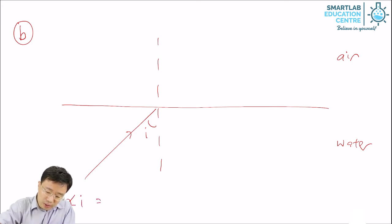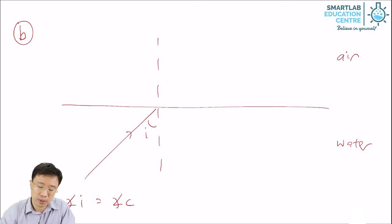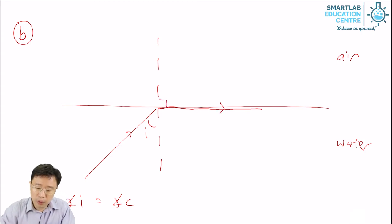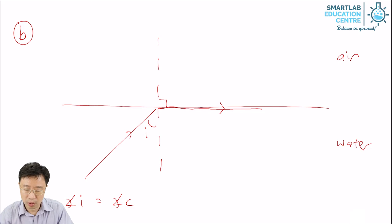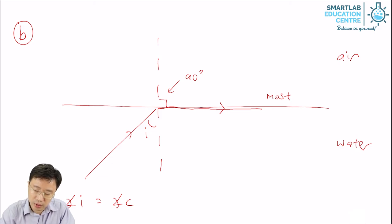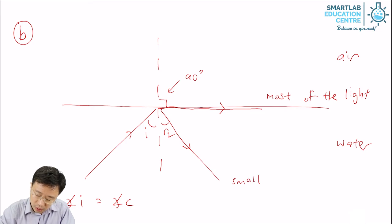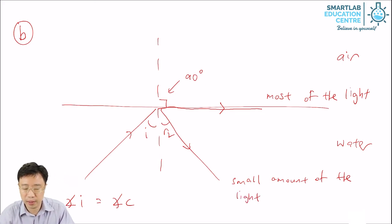If the angle of incidence is equal to the critical angle, then most of the light will be refracted at an angle of refraction of 90 degrees, and a small amount of light will be reflected back into the water.